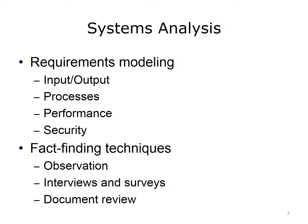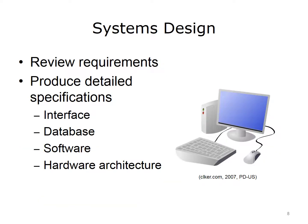Requirements need to be documented, actionable, measurable, testable, and defined at a level of detail sufficient for system design. The objective of the systems design stage is to determine system specifications that would satisfy all requirements formulated during the previous stage. Systems design starts with a review of the system requirements, then different system components are designed. Those include the system interface, its database, software, and hardware architecture. The deliverable of this stage is a blueprint for building the new system.